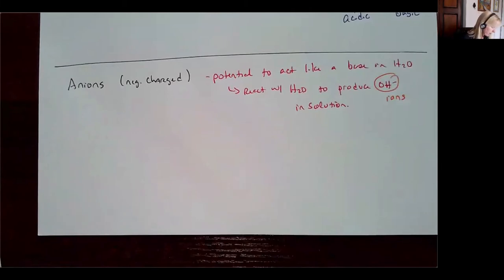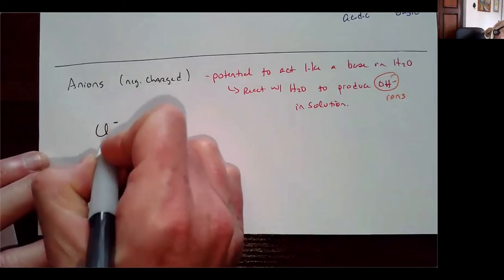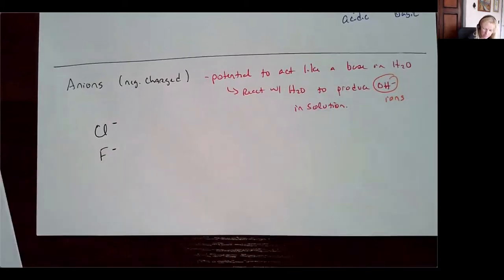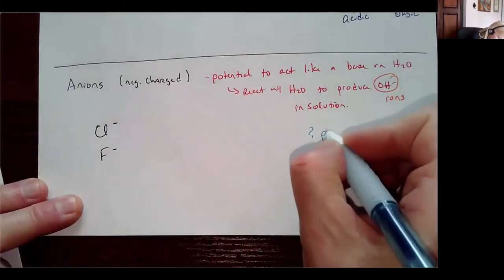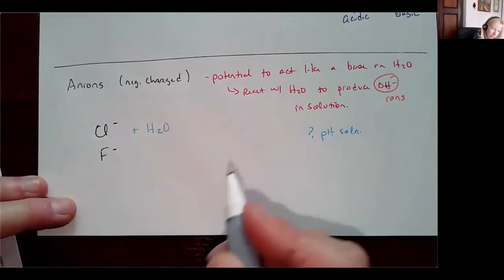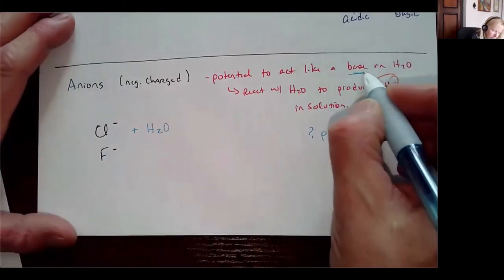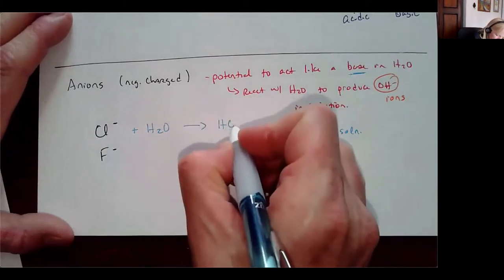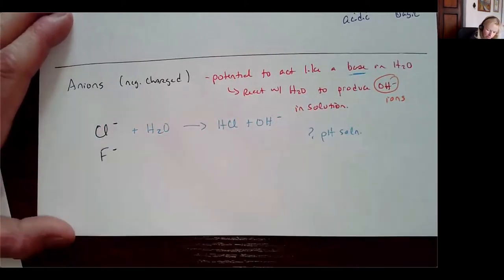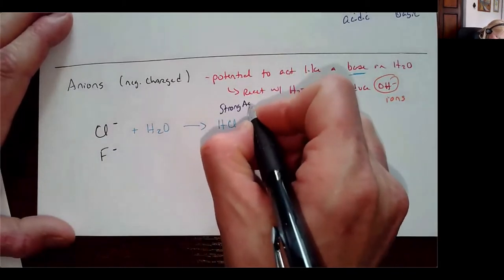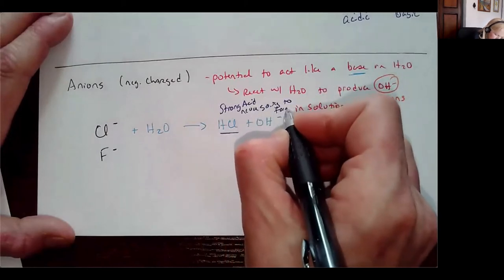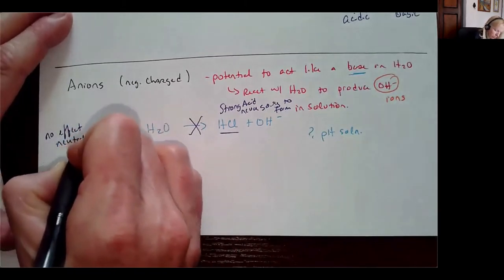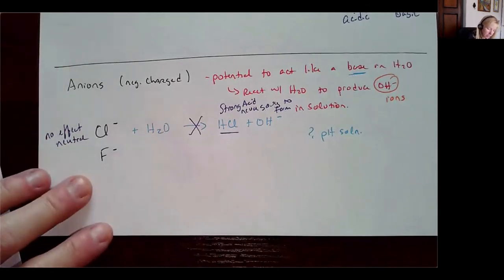Let's look at chloride ion vs. fluoride ion. If chloride were to react with water as a base, it would form HCl and OH⁻ — but HCl is a strong acid, so it's never going to form; it always dissociates completely. So chloride has no effect on pH. The anion of a strong acid is not going to have any effect.